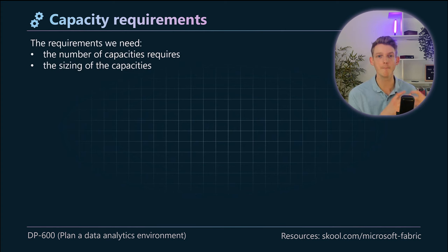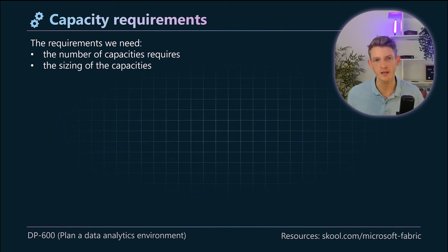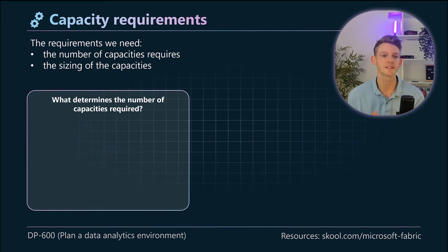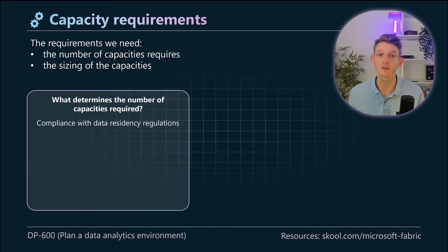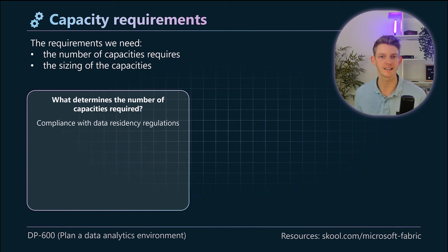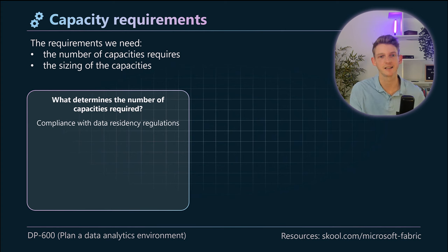Let's start thinking about capacity requirements. The requirements we need are the number of capacities required and the sizing — the SKU, the stock keeping units. In Fabric we have capacities of varying sizes. One thing that impacts the number of capacities required is compliance with data residency regulations. The capacity dictates where your data is stored. If regulations require data to reside in the EU for GDPR, that's one capacity. If other requirements say certain datasets must be stored in the US, you'll need a separate capacity for that as well.